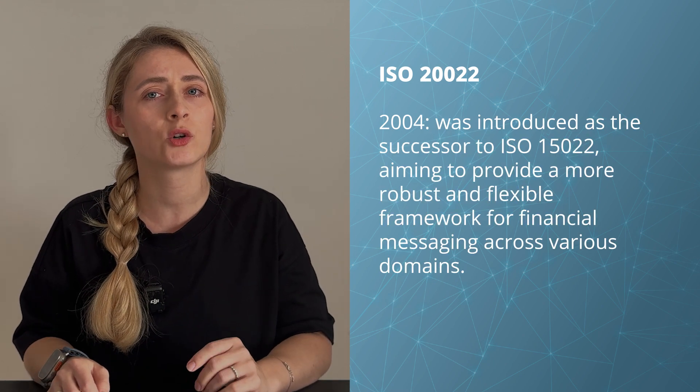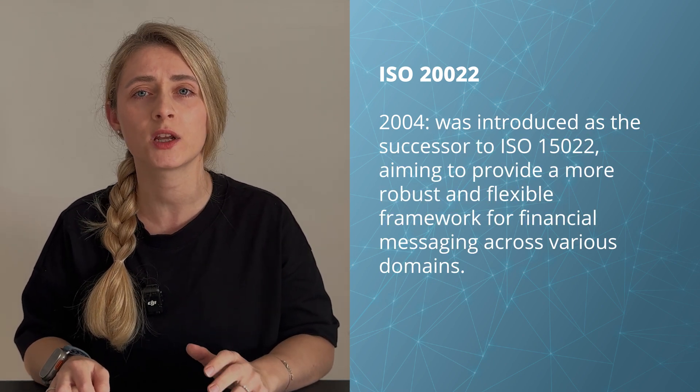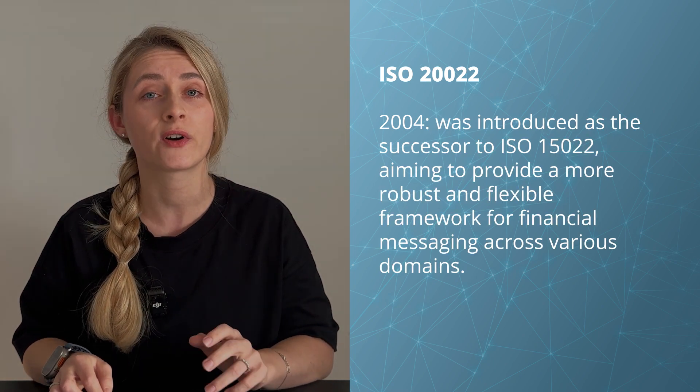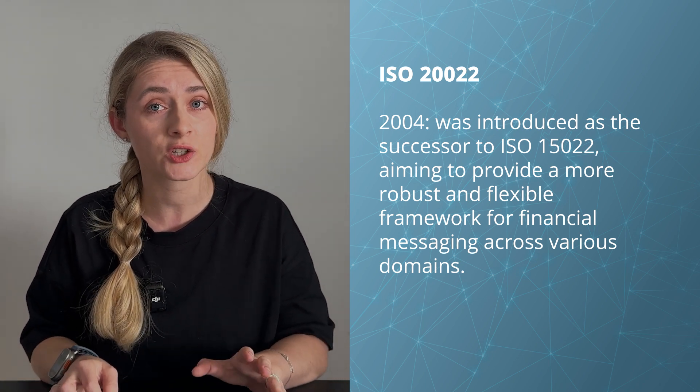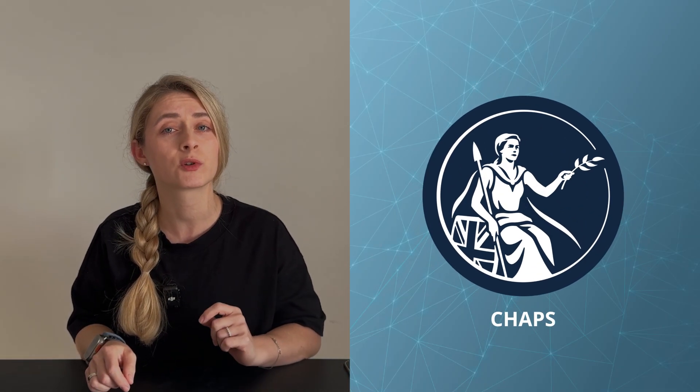ISO 20022 was first introduced in 2004 as a successor of ISO 15022. In 2010, the standard was initially adopted by specific systems like SEPA. In 2013, some institutions initiated adoption of this standard for unification of the payment infrastructure. SWIFT and large financial systems such as FedNow and CHAPS started migration to this standard in 2023.